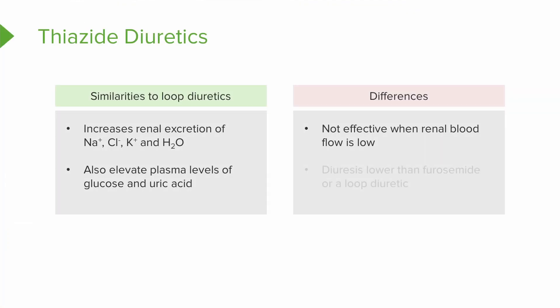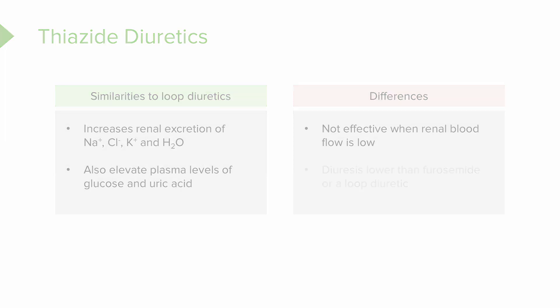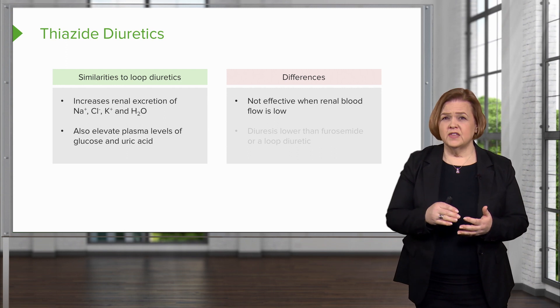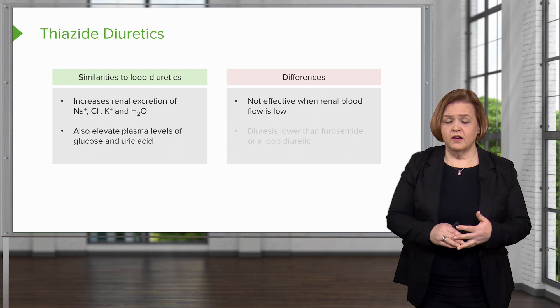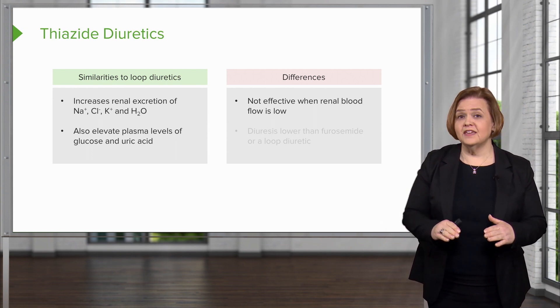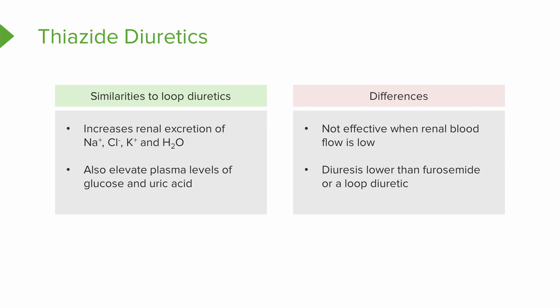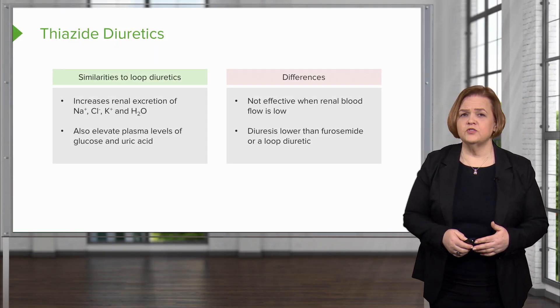Now let's look at some differences. Loop diuretics are the best choice for somebody in renal failure. We would not use a thiazide diuretic if a patient has low renal blood flow or kidneys that aren't working well. So if a test question describes a patient in severe congestive heart failure with failing kidneys, the answer would not be a thiazide — it would be a loop diuretic. Furosemide is a good example of a loop diuretic we would use for anybody whose kidneys are really struggling.